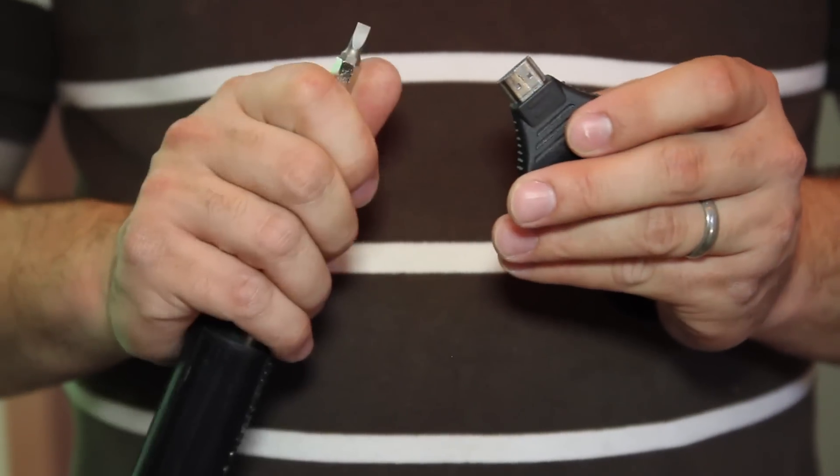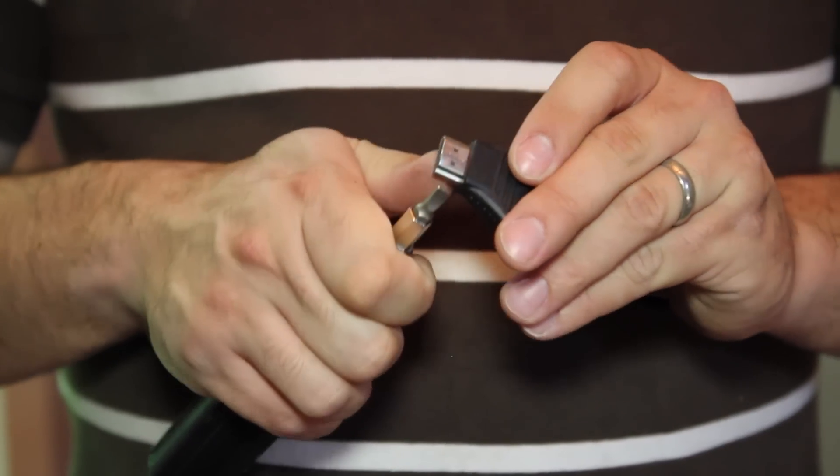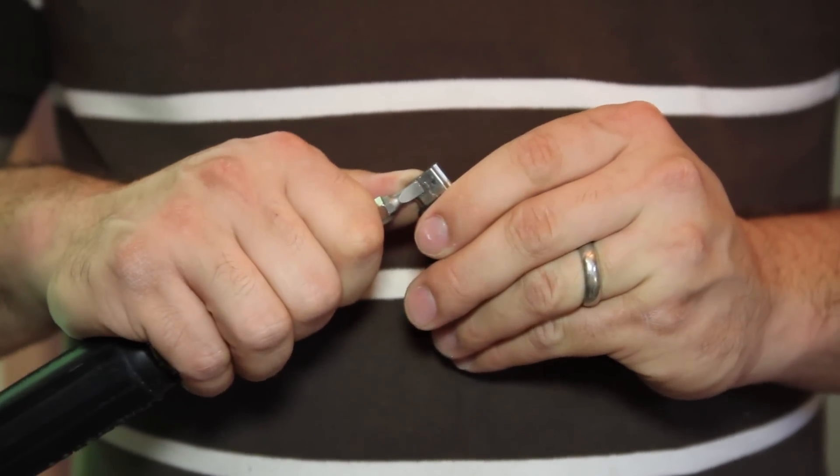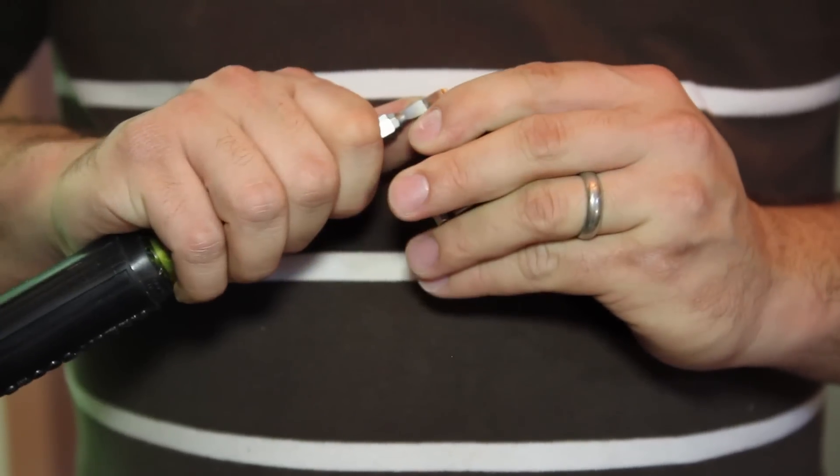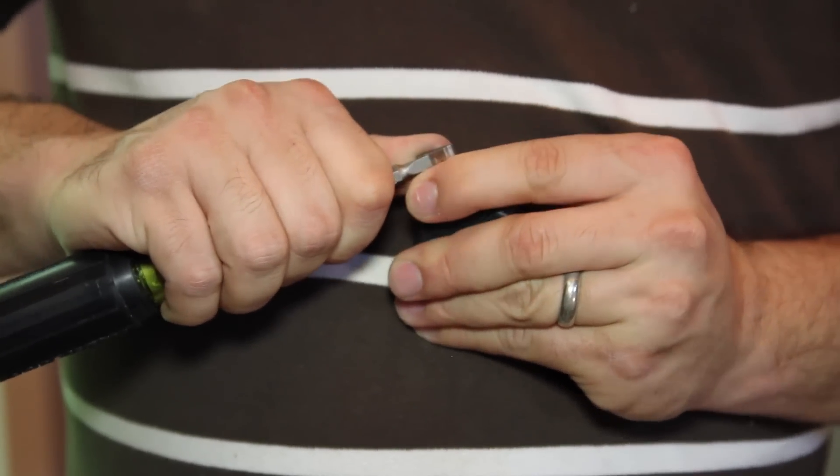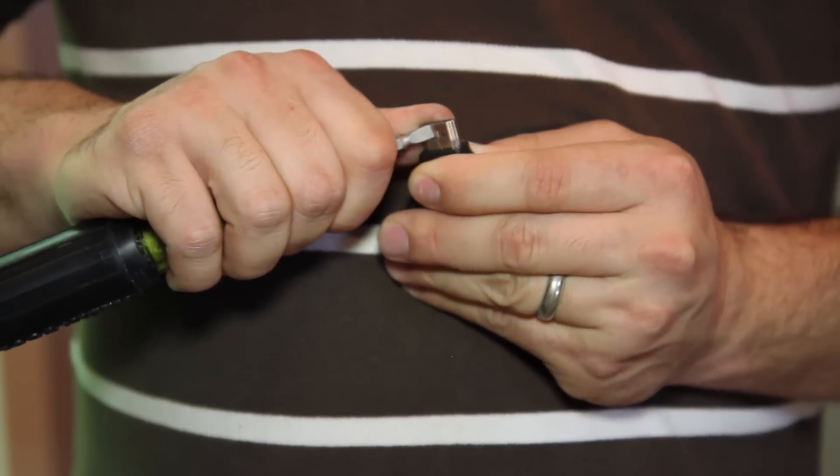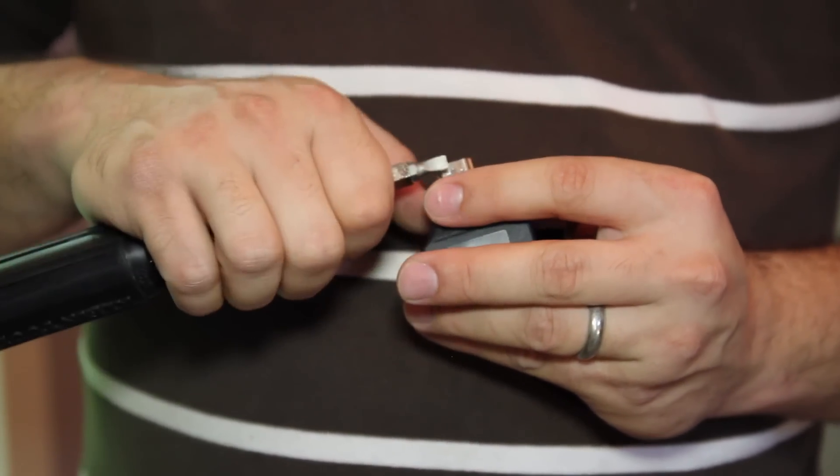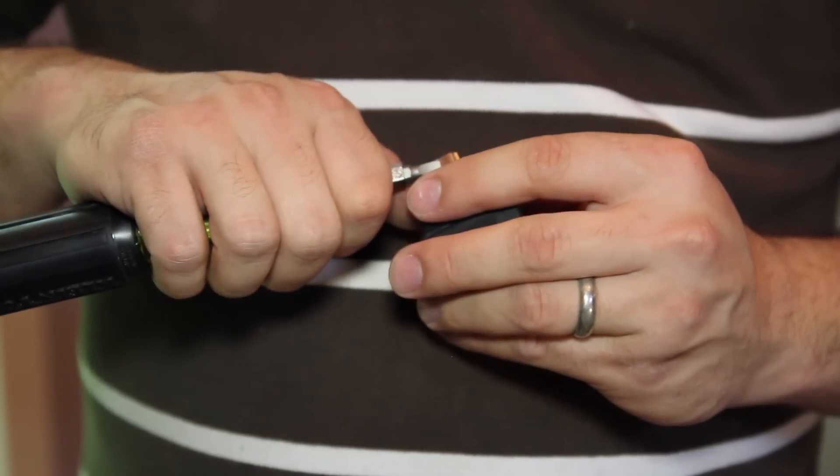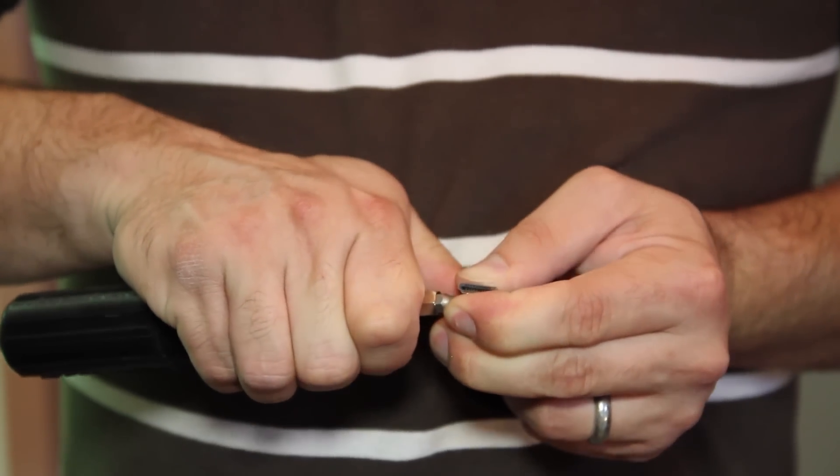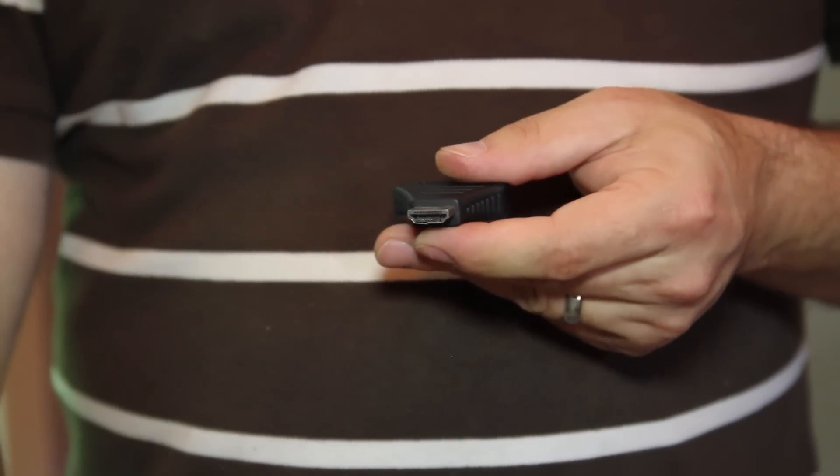We'll just take our flathead screwdriver and apply it right against the bottom edge here, and we're just going to press until this metal goes back into position. It probably won't be perfect, but it should be enough for you to be able to use the device again.